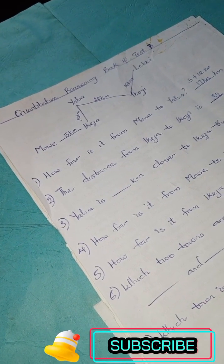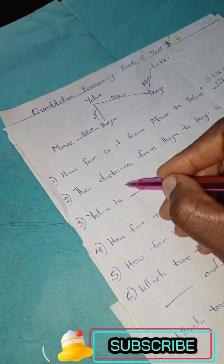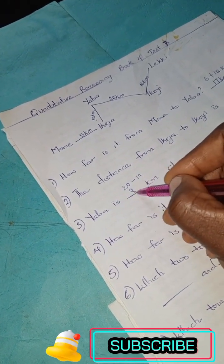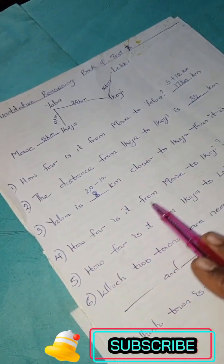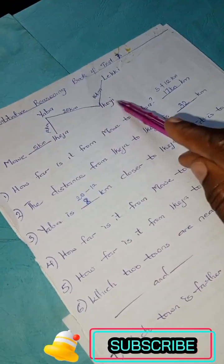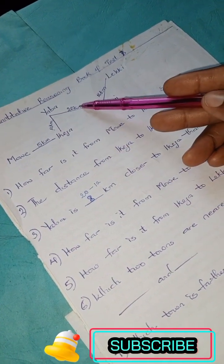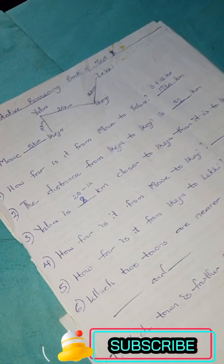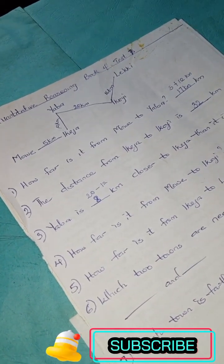How far is it from Mui to Ikoyi? From Mui to Ikoyi, we have 5 kilometers plus 12 kilometers plus 20 kilometers. So we have 37 kilometers when you add them up.